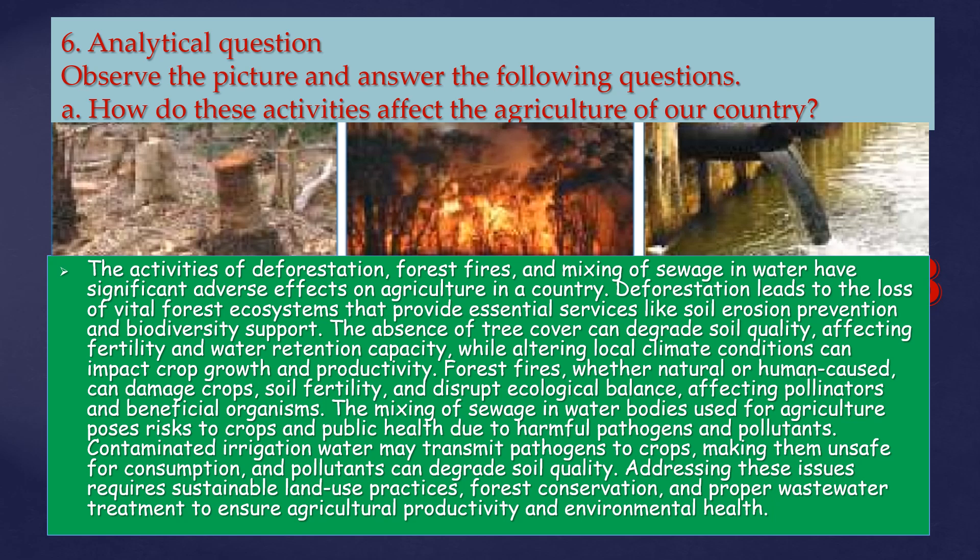Contaminated irrigation water may transmit pathogens to crops, making them unsafe for consumption, and pollutants can degrade soil quality. Addressing these issues requires sustainable land use practices, forest conservation, and proper wastewater treatment to ensure agricultural productivity and environmental health.